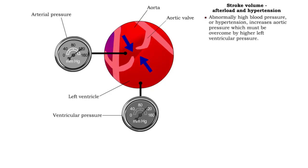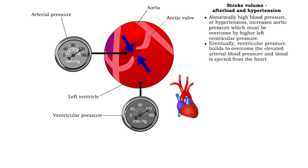Hypertension increases aortic pressure and the left ventricle must work harder to generate the pressure required to maintain stroke volume and cardiac output. Eventually ventricular pressure builds to overcome the elevated arterial blood pressure and blood is ejected from the heart.